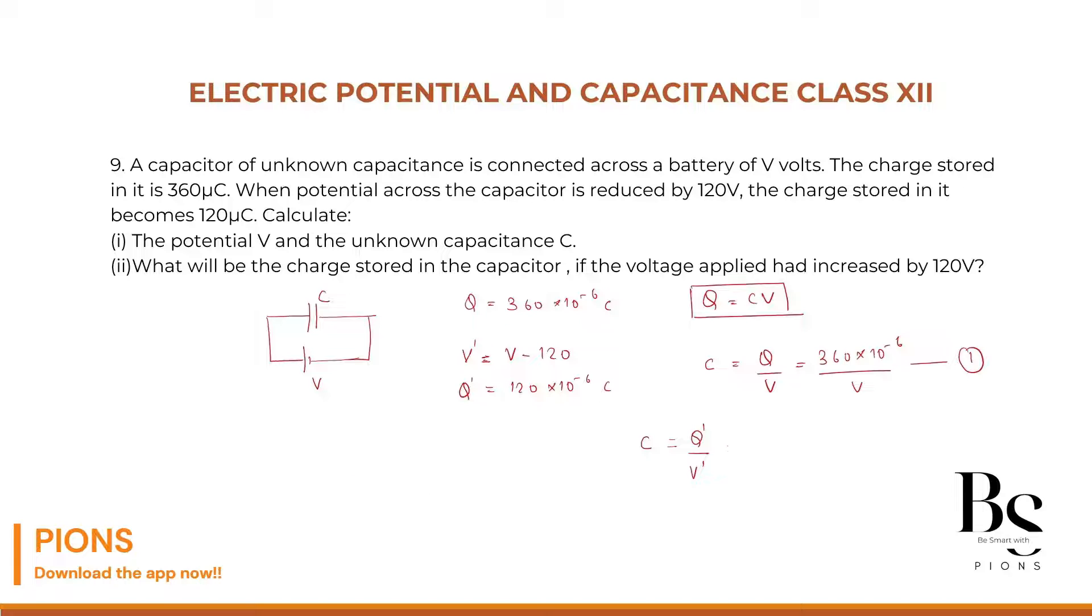Q dash will be 120 into 10 to the power minus 6. V dash, which is the voltage, V minus 120. This is our equation number 2. That's our first one, this is our second one. Both capacitances are equal, so from 1 and 2.